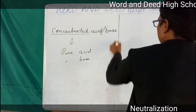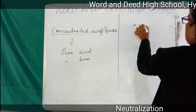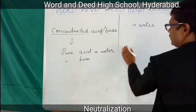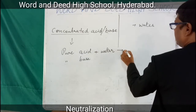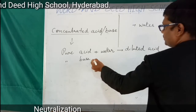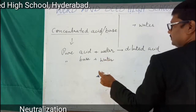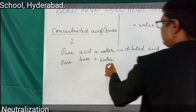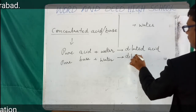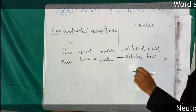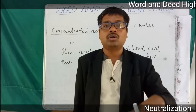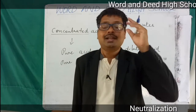Now, if you want to add some water — if you add some water to pure acid — what happens? That becomes dilute, diluted acid. In the same way, pure base plus water will become diluted base. On the whole you can understand: when you add some water to the pure substances they are called diluted. Now let us talk about what is neutralization.